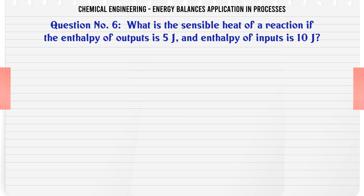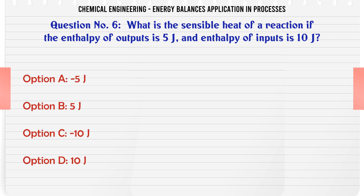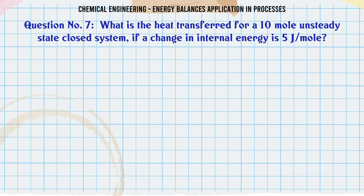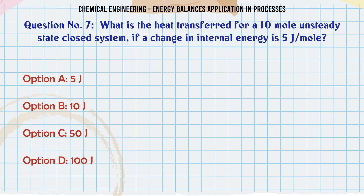What is the sensible heat of a reaction if the enthalpy of outputs is 5 J and enthalpy of inputs? The correct answer is 10 J. What is the heat transferred for a 10 mol unsteady state closed system if change in internal energy is 5 J/mol? A: 5 J.